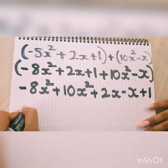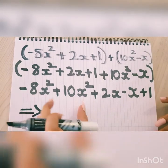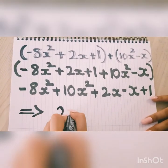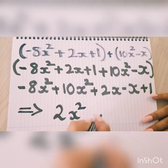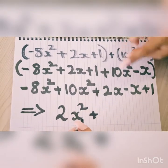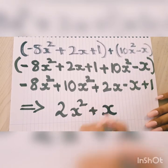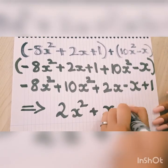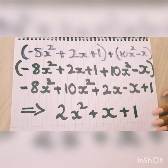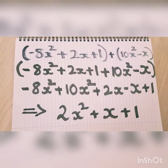And then your final answer: 2x² + 2x - x is equal to x and then your remaining constant, that's +1. That's how you get your final answer of adding polynomials.